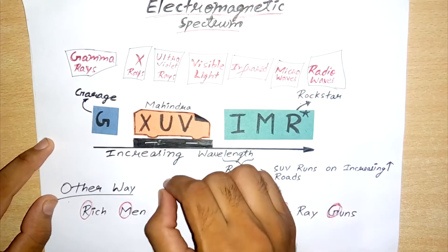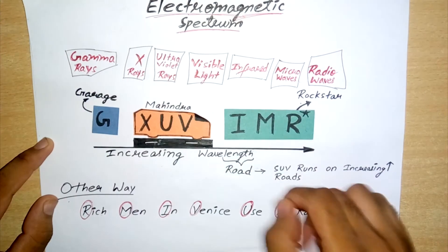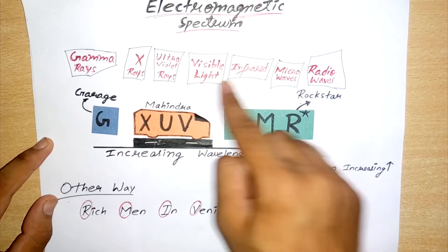Electromagnetic spectrum, which is GXUV-IMR: gamma rays, X-rays, ultraviolet rays, visible light, and infrared.